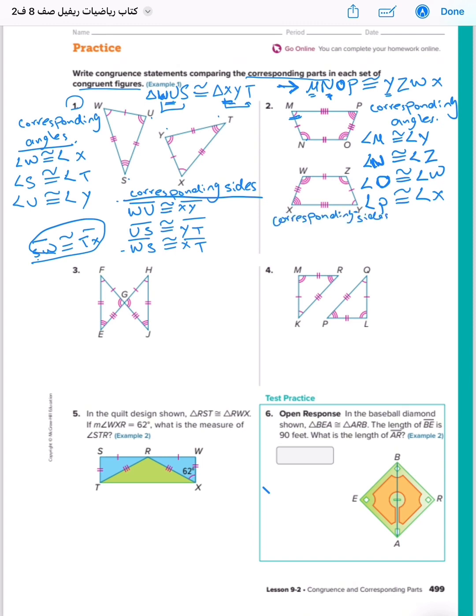Let's write corresponding sides. MN congruent to YZ. Also I will write from the name here. Take two letters with two letters. Then NO congruent to ZW.